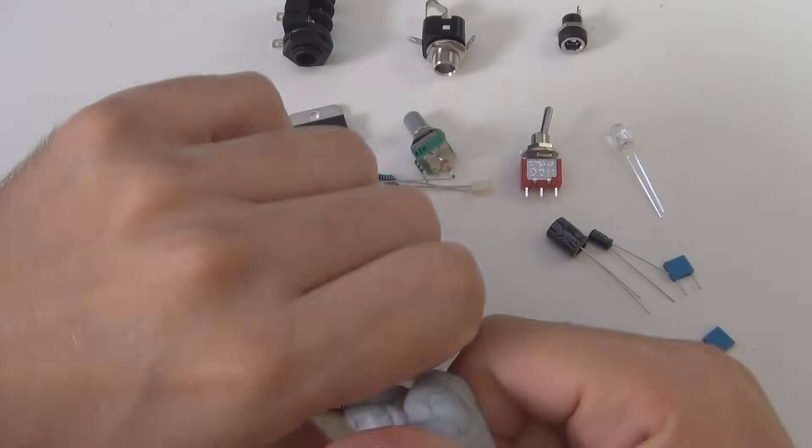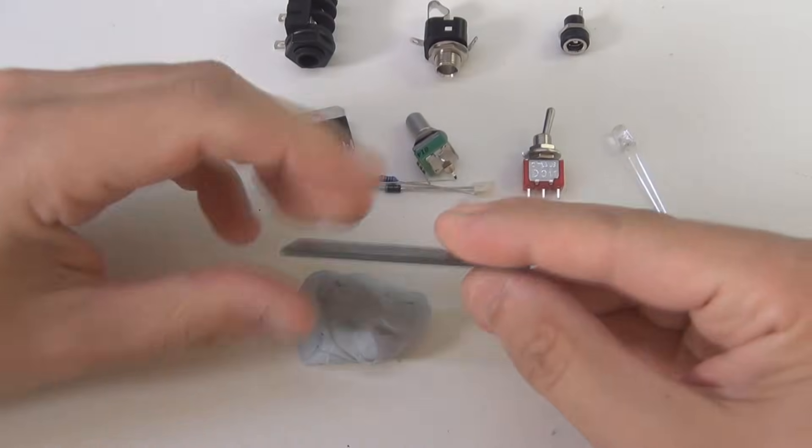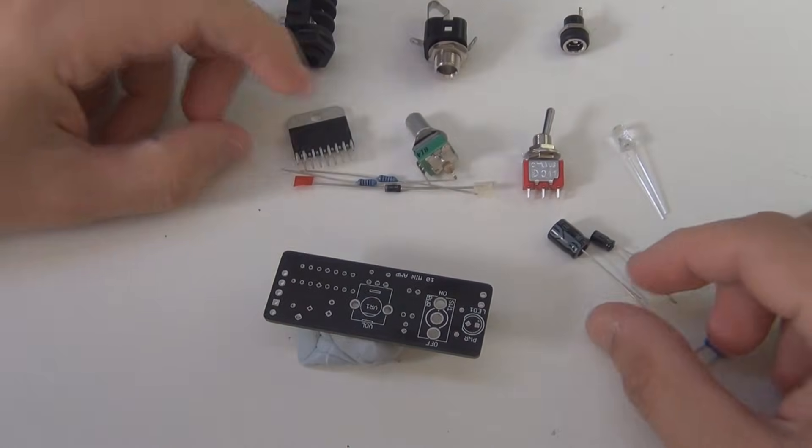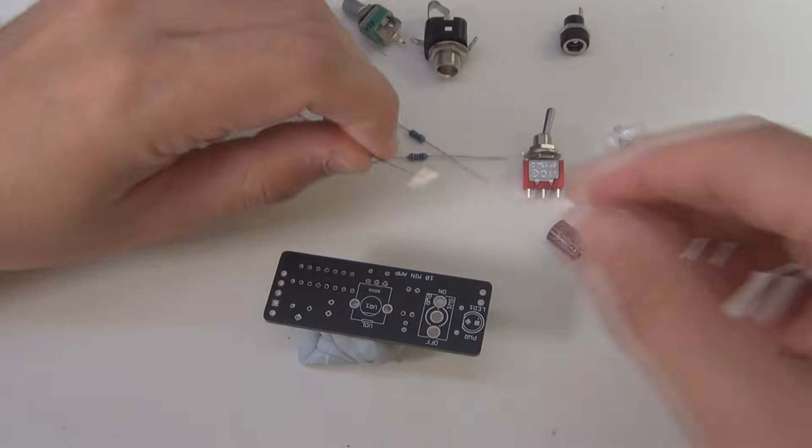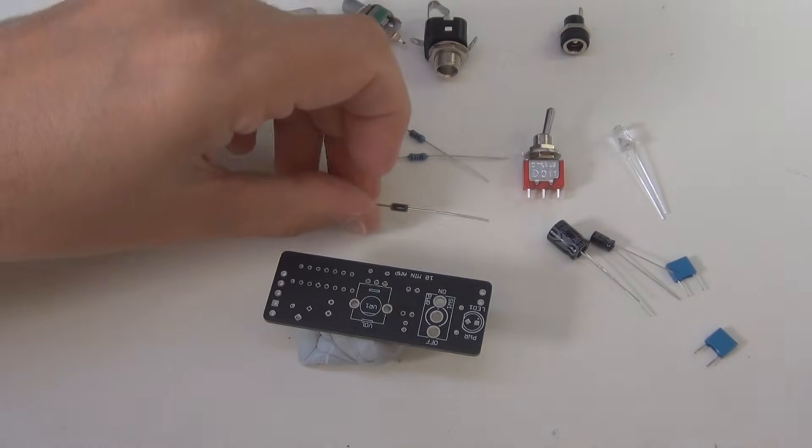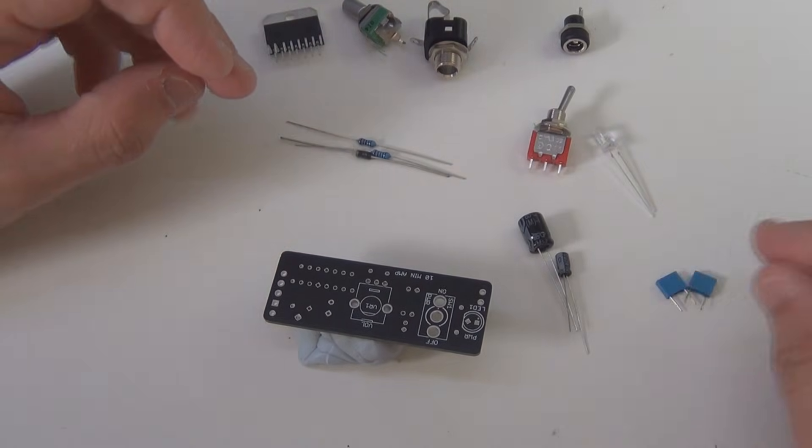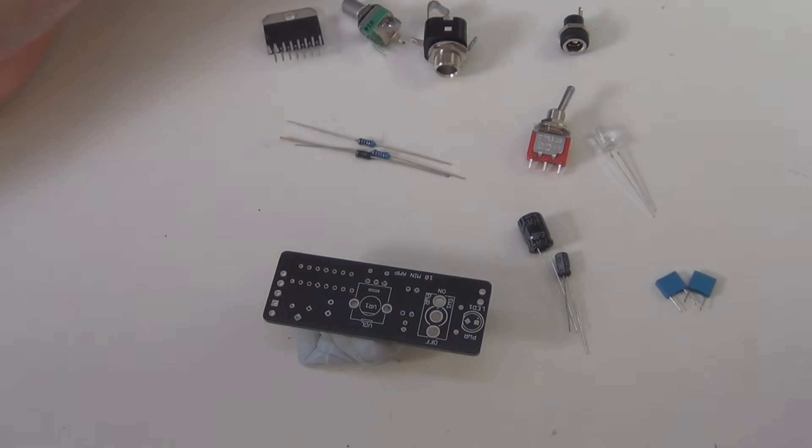If you've seen any of my other videos you'll know that I usually use BluTac when I do these little projects, it's just a quick and easy way to hold things in place. Although this is very simple, there's just a few things that you need to be aware of. Some of these components are polarized, which means they've got a plus and a minus and they have to go in a particular way.